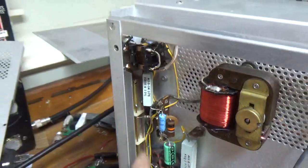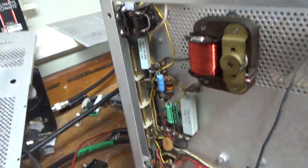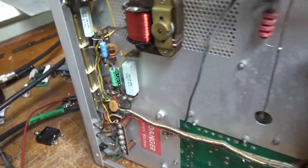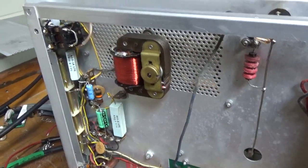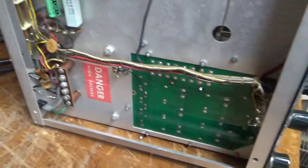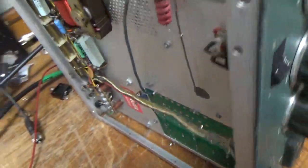This is the directional coupler for the relative power meter. So that all looks good. I also replaced the power cord plug.